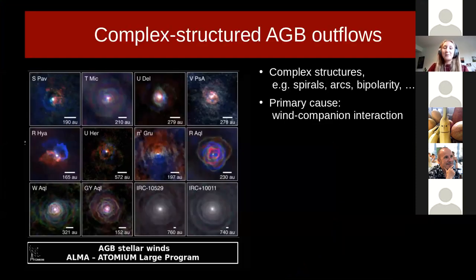As you know from the previous talk by Silke, recent observations reveal that the winds of AGB stars contain complex structures such as spirals, arcs, bipolarity, and disks. Many of these structures that make the winds deviate from spherical symmetry are believed to be formed primarily by the interaction of the wind with a companion star or planet.